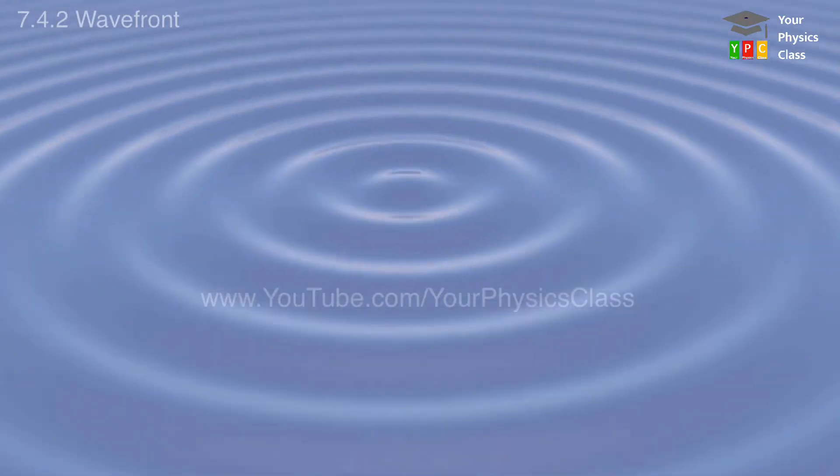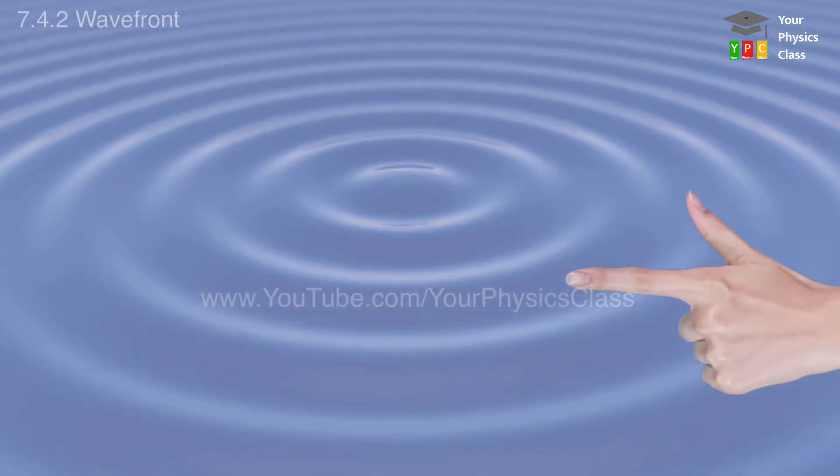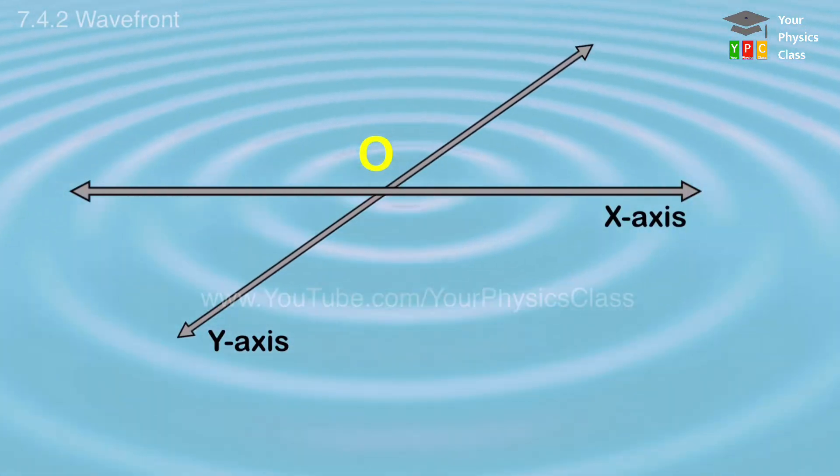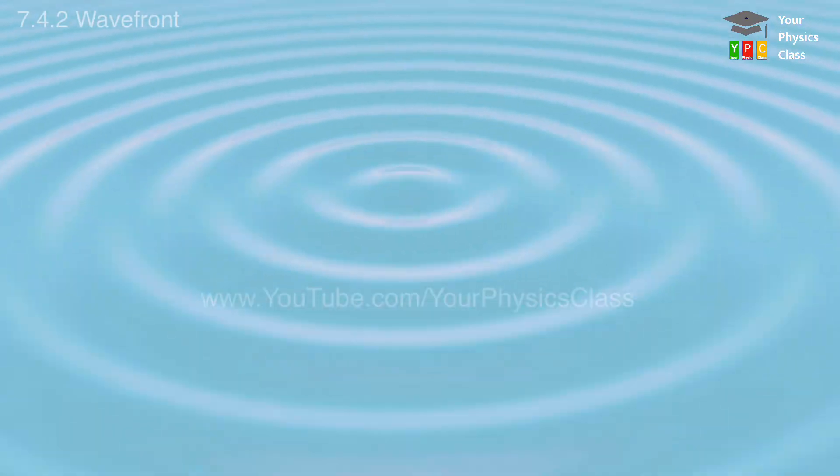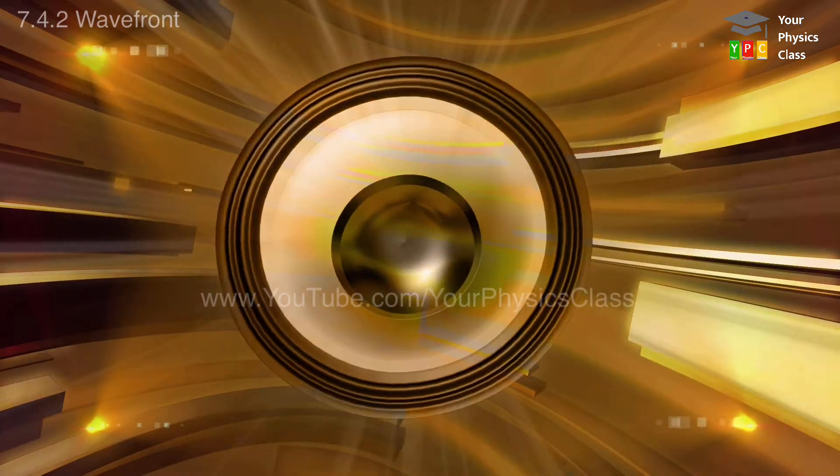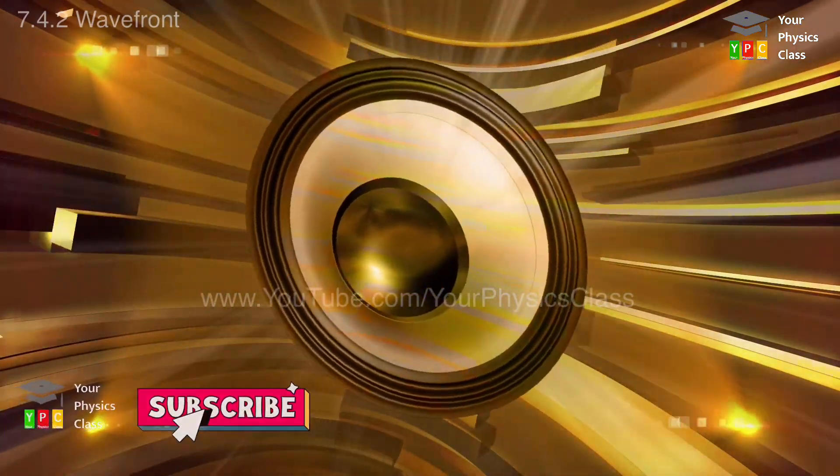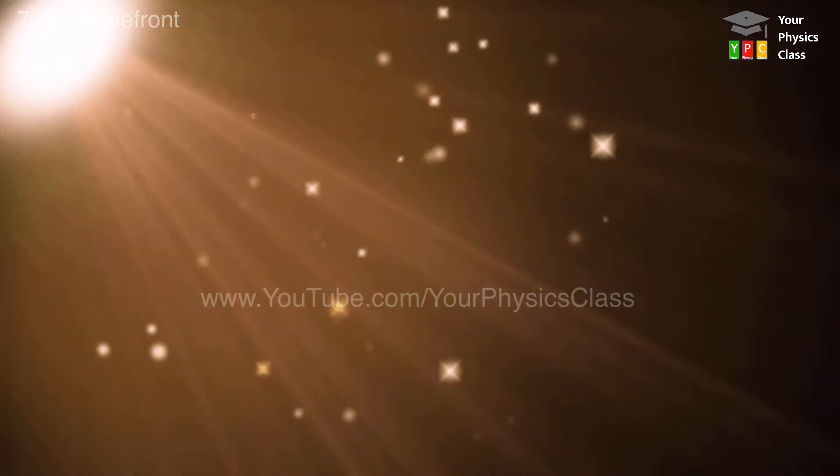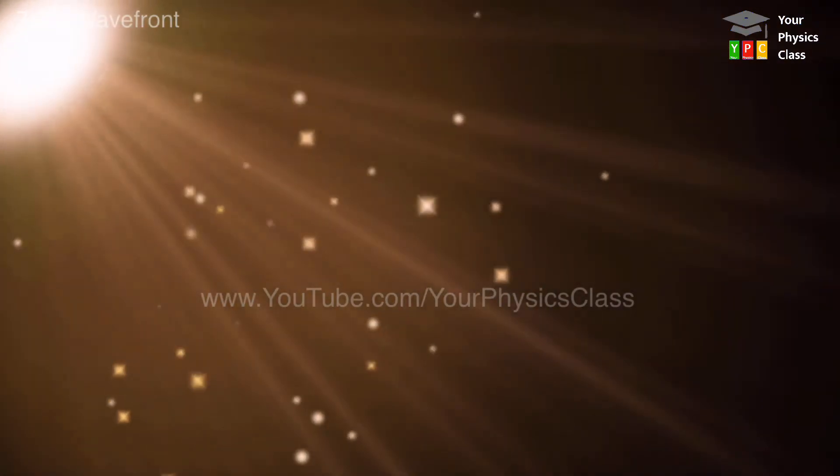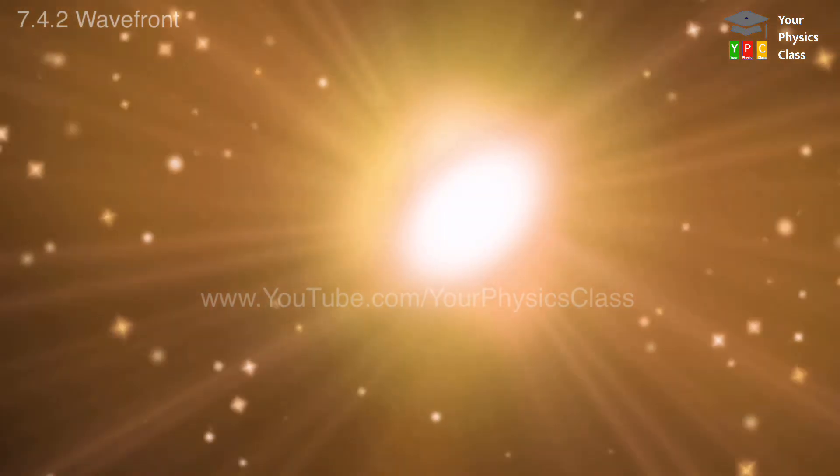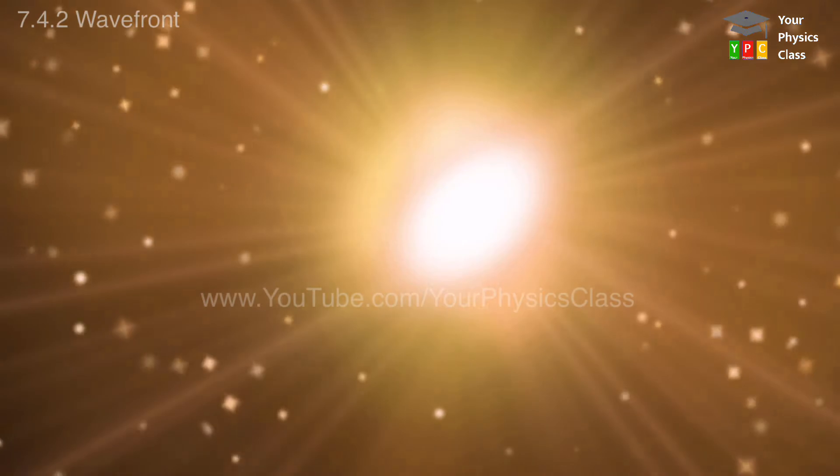Water waves are two-dimensional, i.e., along the surface. The three-dimensional waves like sound wave produced by the source of sound or light waves produced by the light source travel in all directions away from the source and propagate in three dimensions. Such waves are called spherical waves.